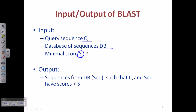The output provided by BLAST is sequences from the database such that Q and the database sequence have scores greater than S. Whatever type of match Q and DB get must exceed the minimal score value S, so you need a greater than S value — otherwise those alignments will not be counted by BLAST.